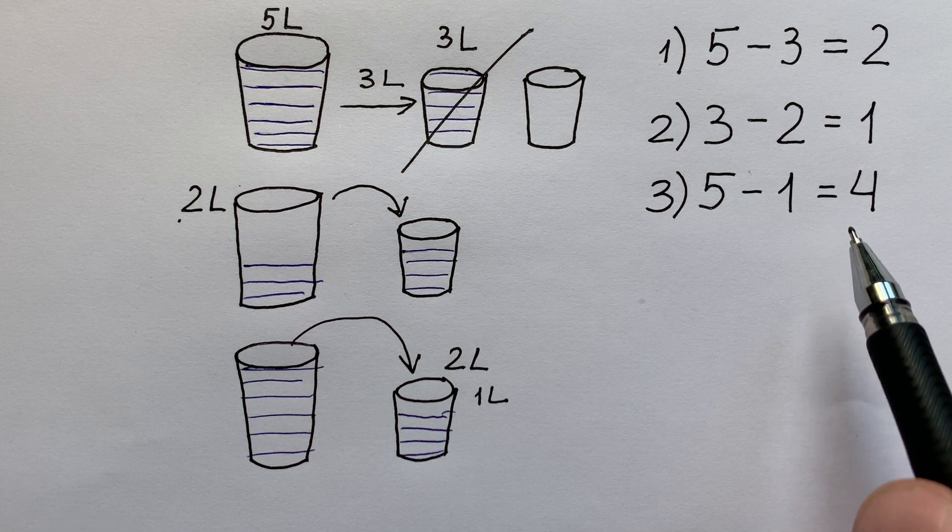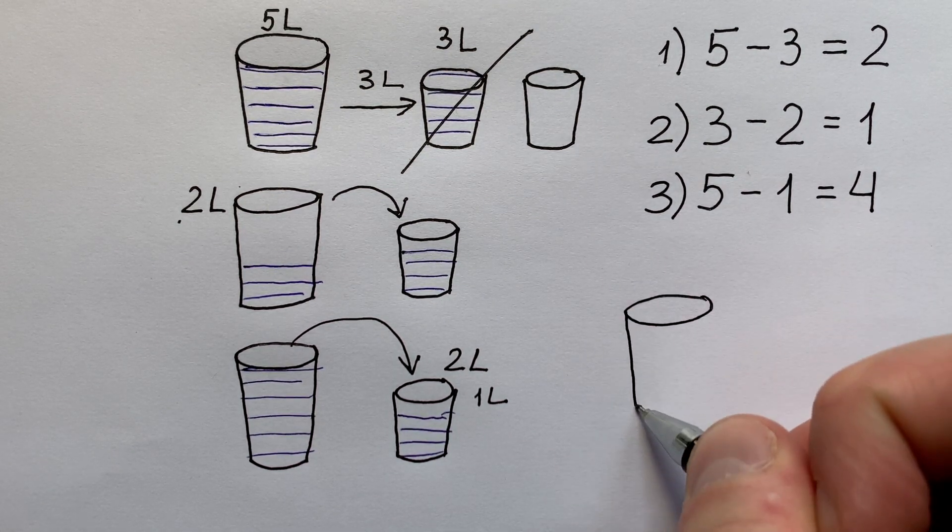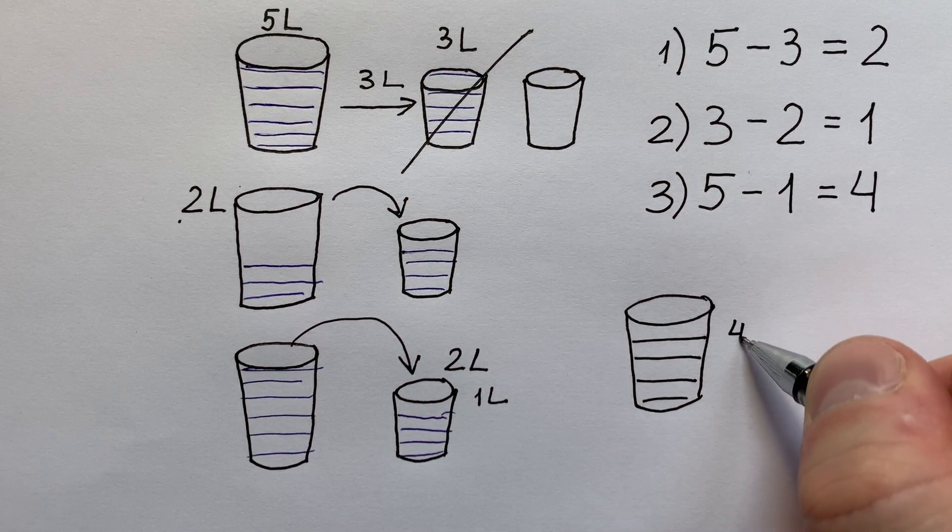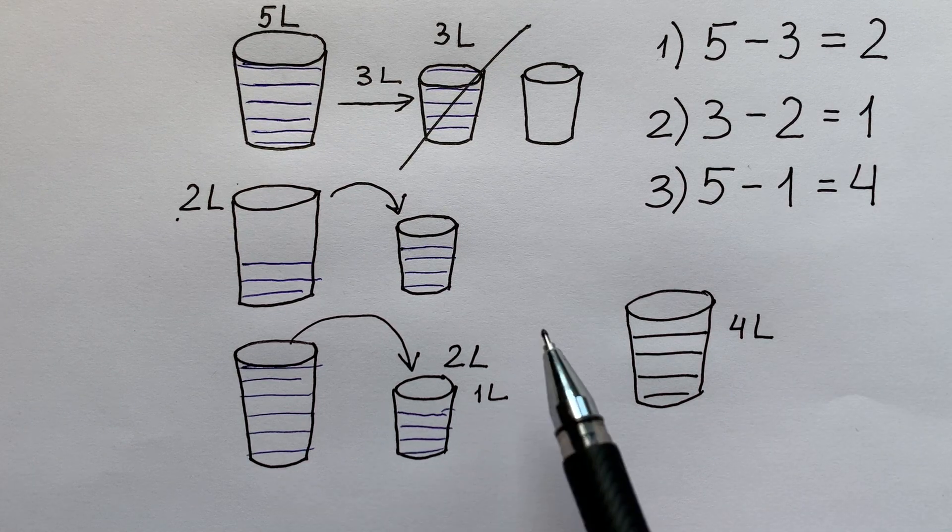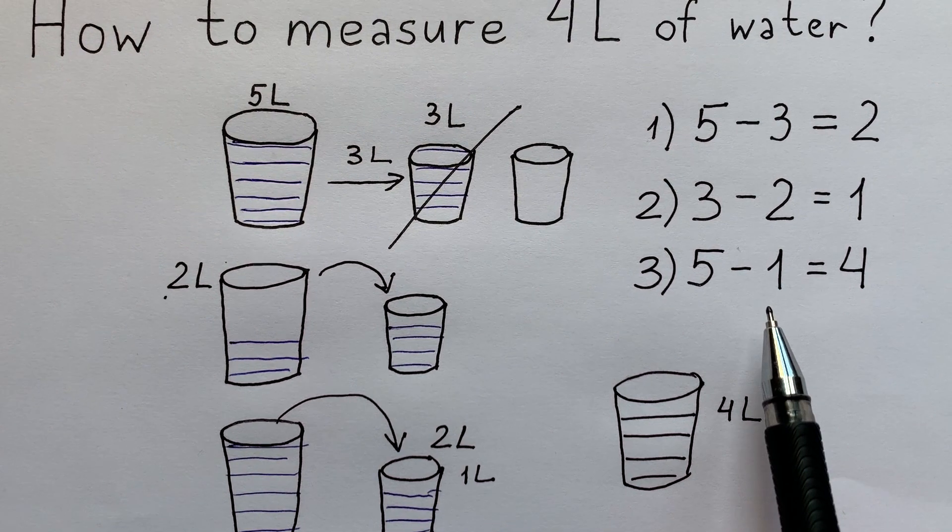This is how many liters we needed to get. So finally, in the big bucket we have four liters of water. Here we solved this little question, but there is another way to solve this problem.